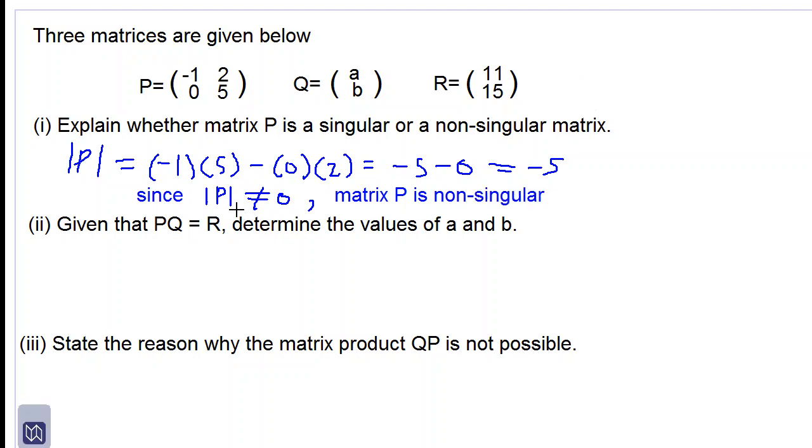Okay, so if the determinant of P would have been equal to 0 then the matrix P would be singular. So because the determinant of P is not equal to 0, matrix P is non-singular.